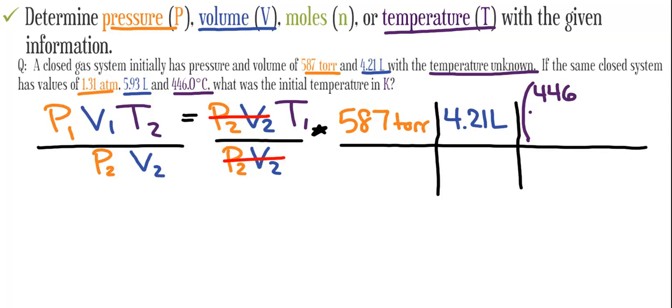587 torr times 4.21 liters times the converted temperature in Kelvin divided by 1.31 atmospheres times 5.93 liters.